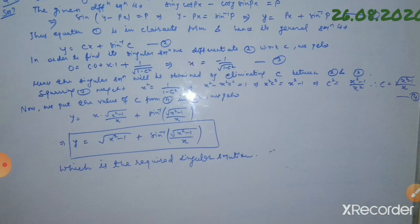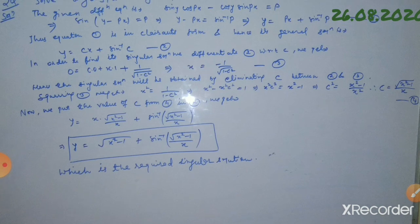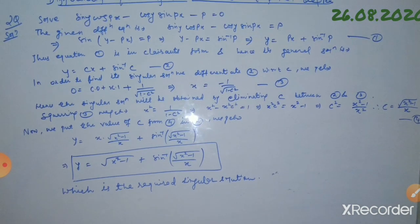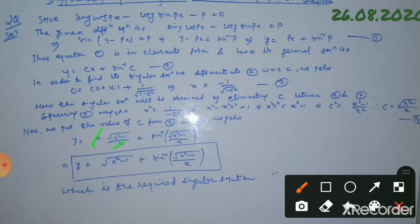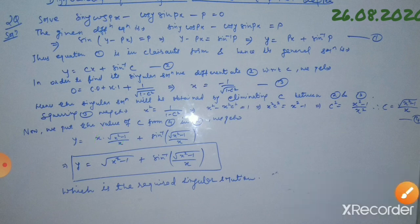Substituting the value of c from equation 4 into equation 2, we get y equals x times root over (x² minus 1) divided by x, plus sin⁻¹ of root over (x² minus 1) divided by x. Since x cancels, we are left with y equals root over (x² minus 1) plus sin⁻¹ of (root over (x² minus 1) divided by x), which is the required singular solution. I hope you all understand it. If you have any doubt or query, please leave a comment in the comment box. Thank you all.